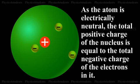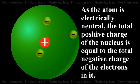As the atom is electrically neutral, the total positive charge of the nucleus is equal to the total negative charge of the electrons in it.